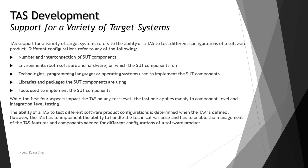The ability of a TAS to test different software product configurations is determined when the architecture is defined. During the architecture definition phase, the details of the TAS will be determined — whether it will be able to support different configurations or not. The TAS has to implement the ability to understand what the requirements and different configurations will be, and be prepared accordingly to meet the expectation.